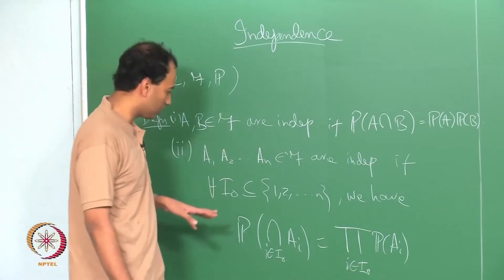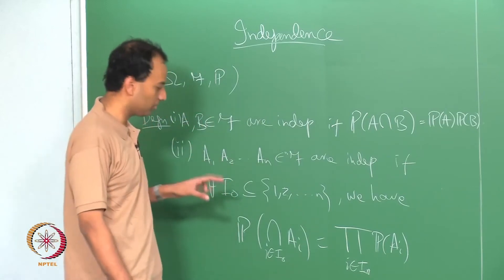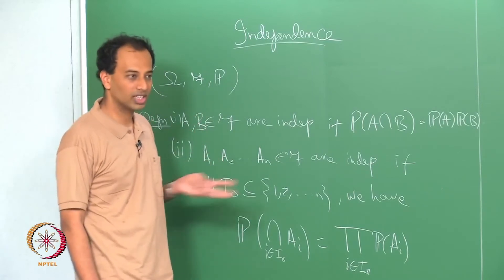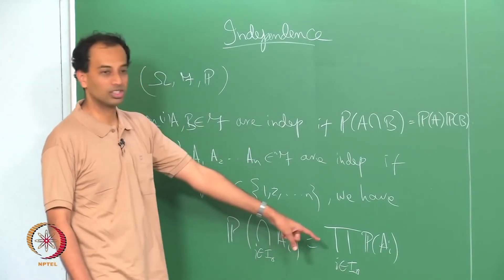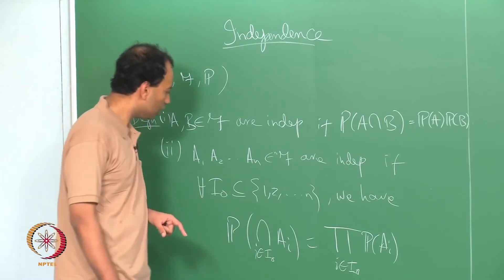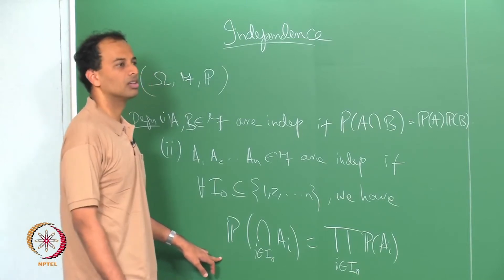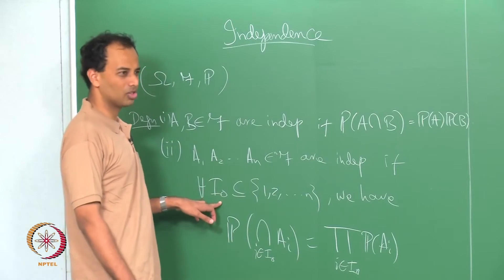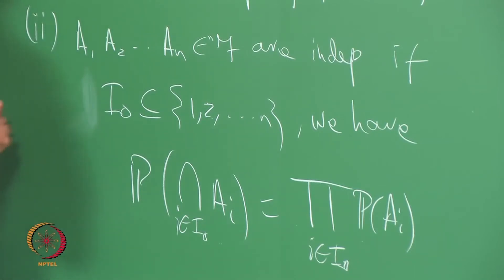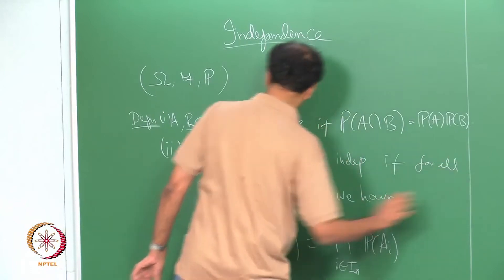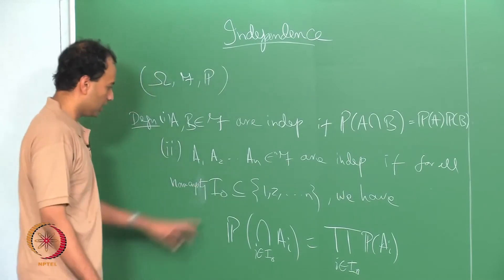For example, if you have A1, A2, A3, it is not enough to verify that the probability of A1 intersection A2 intersection A3 is the product of individual probabilities. You have to verify it all two at a time and then all three at a time. Similarly, for n events you have to verify that all possible subsets have this property. If you have n events, how many equations do you have to check? Two to the power n, but one subset is empty so we require all non-empty subsets.